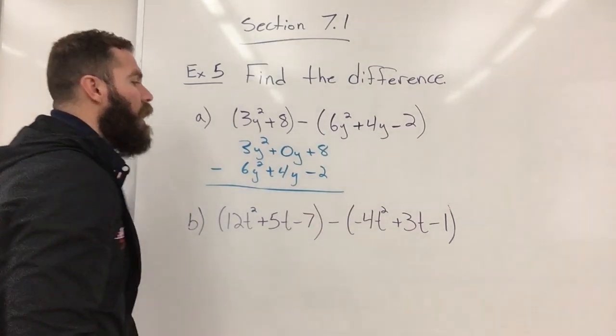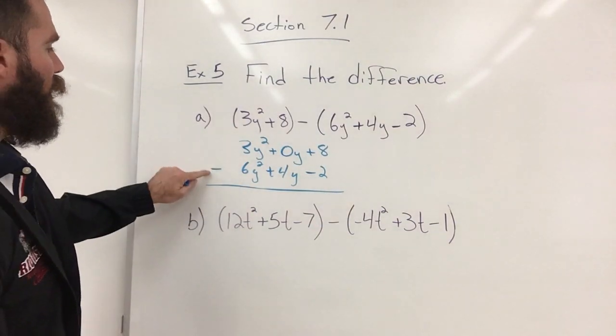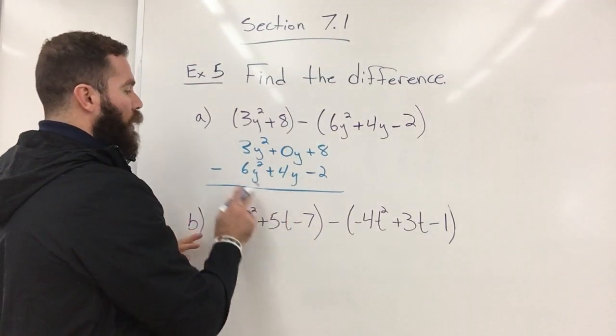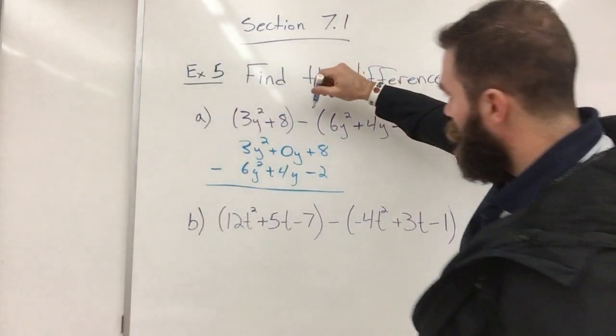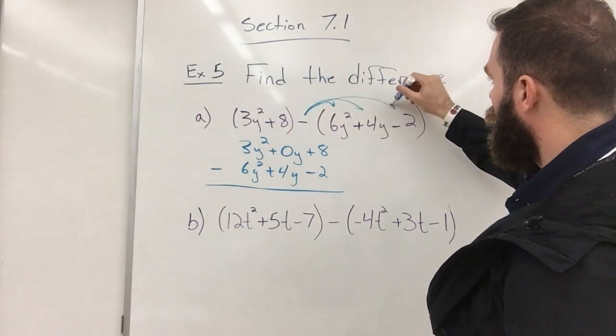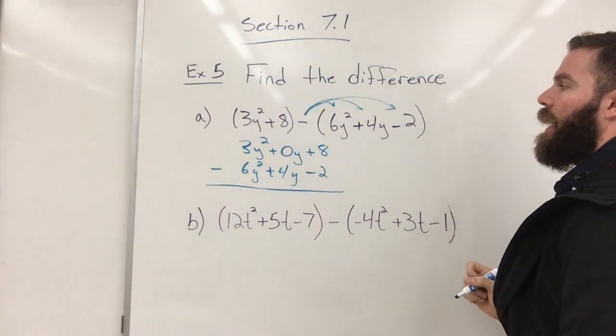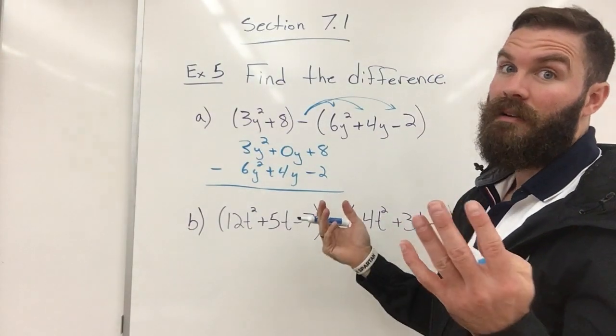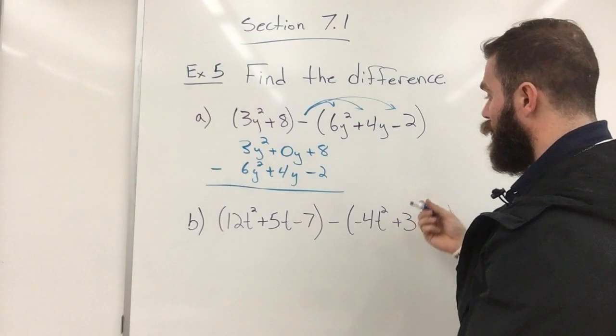Now you can do it like that where you have your subtraction here, or you can put your subtraction where you do the distributive property and put the negative in already and then you add if that's easier for you. That will look like this.